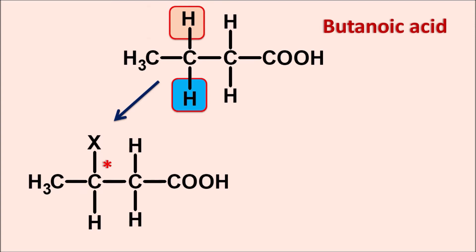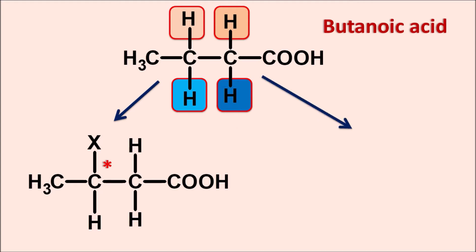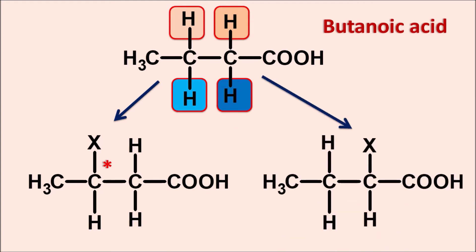Similarly, we can observe the other two hydrogens on the second carbon. Again, suppose one of the hydrogens is going to be replaced with the other group X, then it can produce a structure like this. Now here the second carbon is chiral, so it is optically active and it can exist as a pair of enantiomers. So the hydrogens attached at the second carbon are also enantiotopic hydrogens. In this way, butanoic acid has enantiotopic hydrogens at the second carbon as well as at the third carbon.